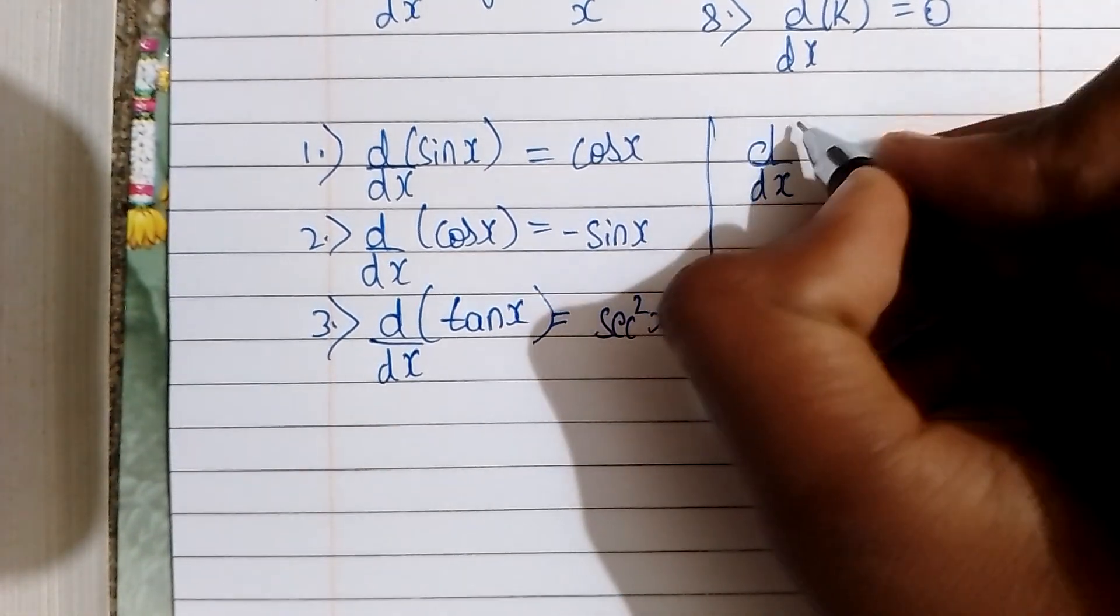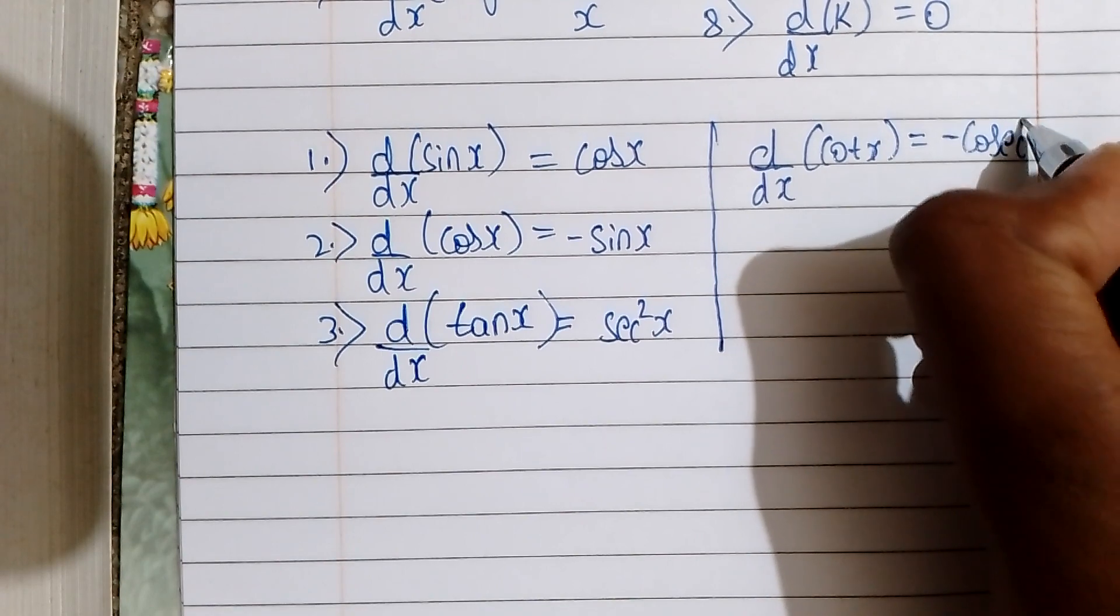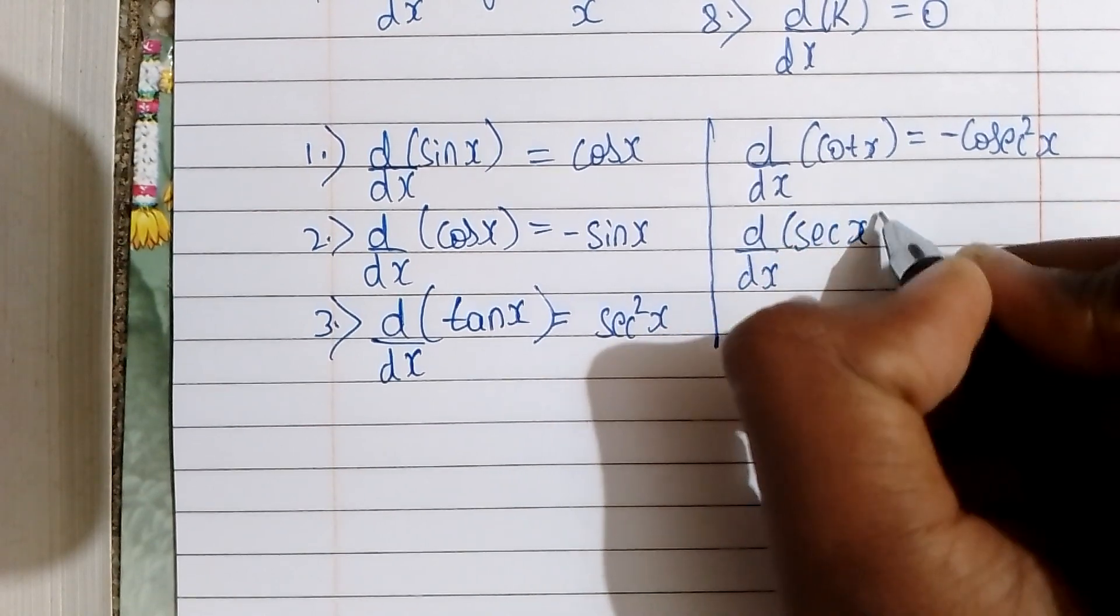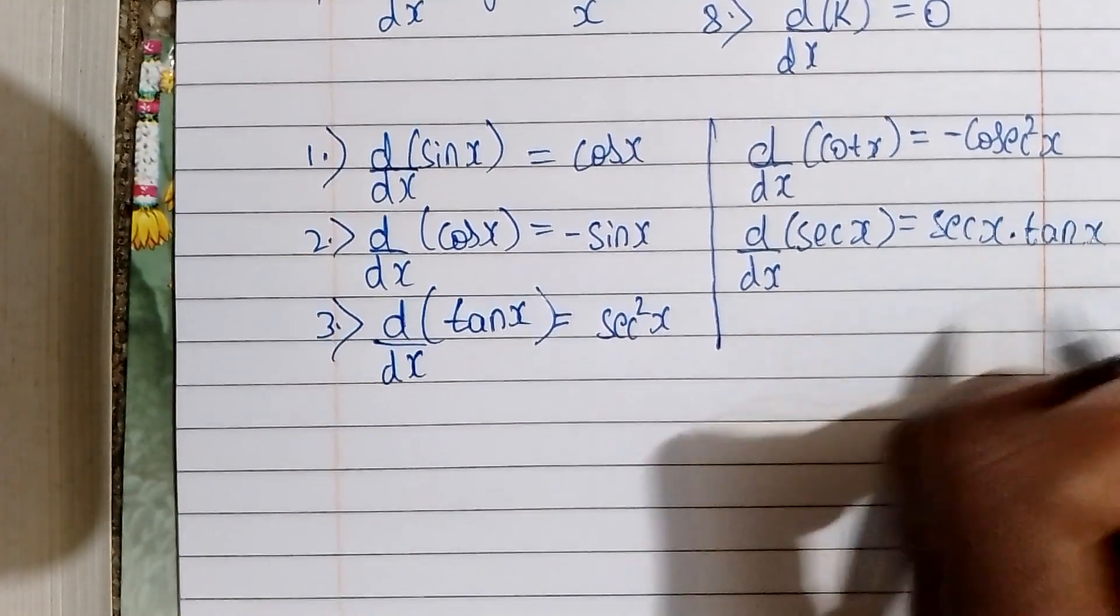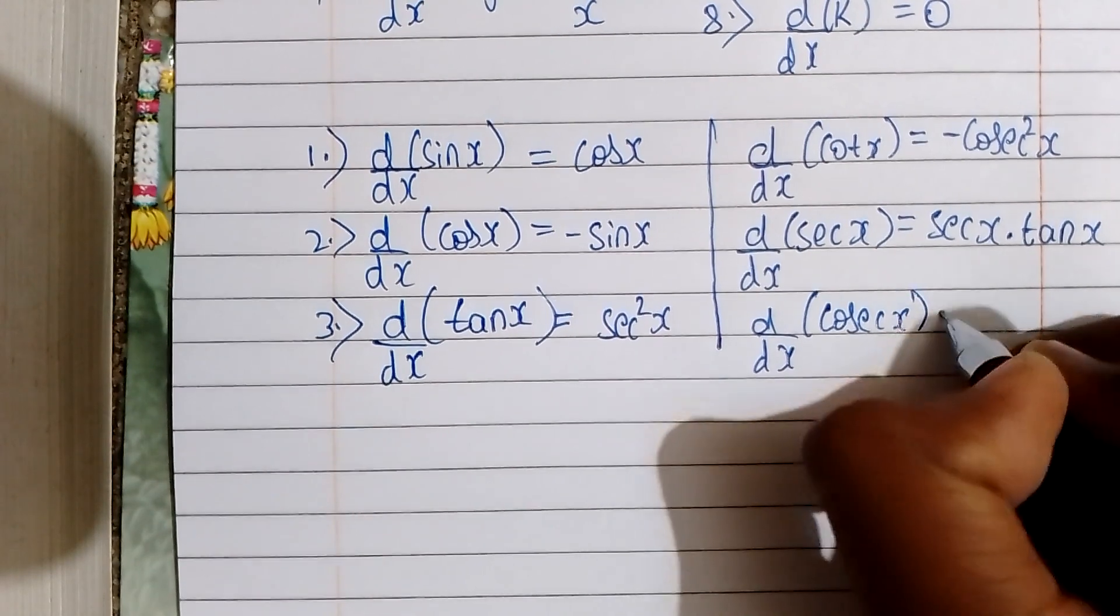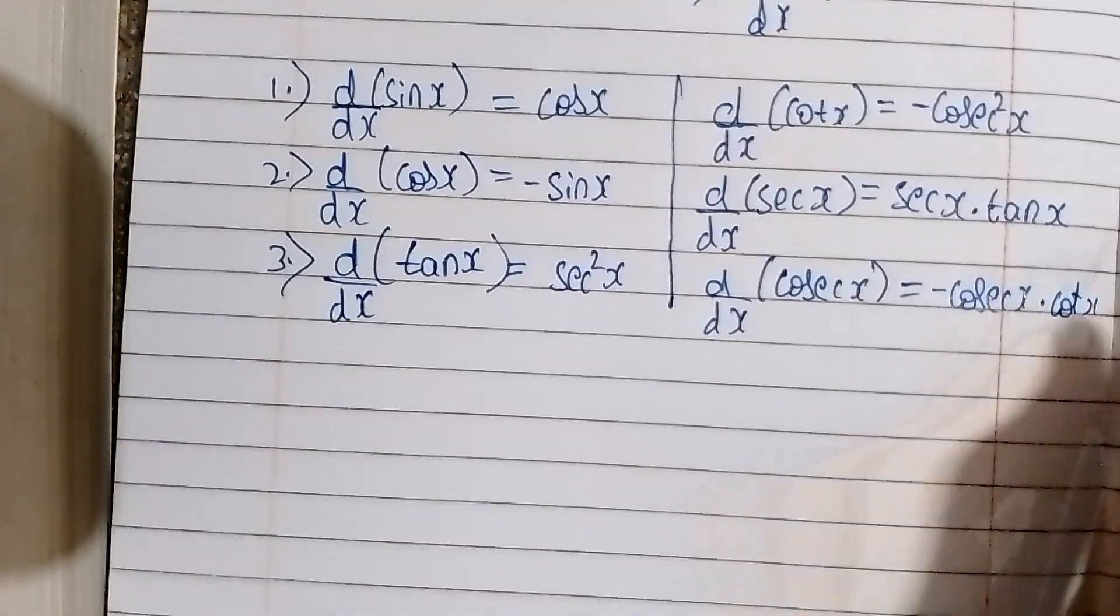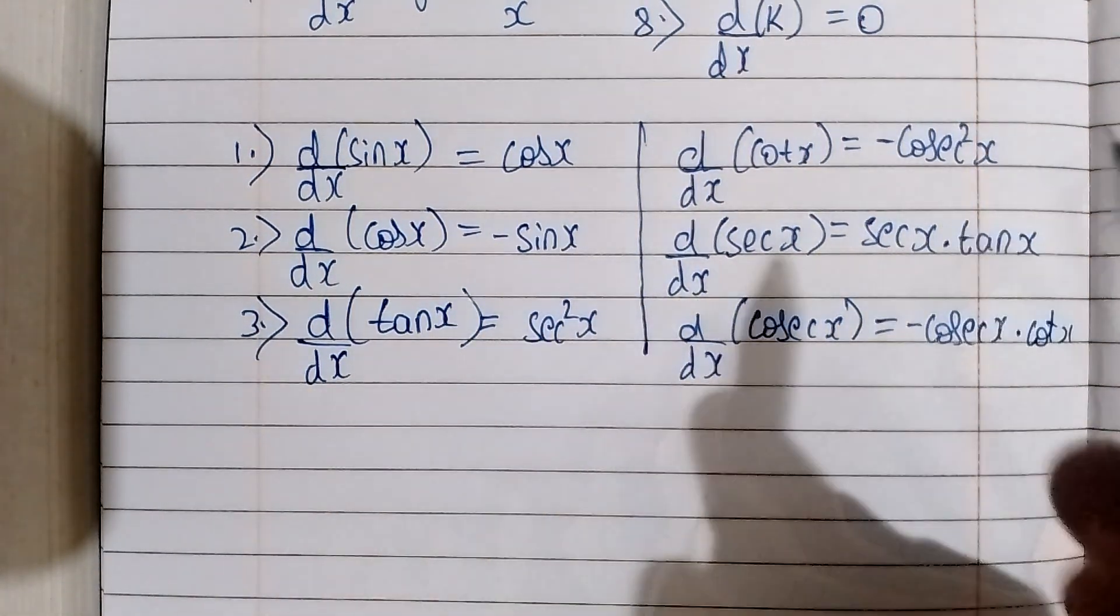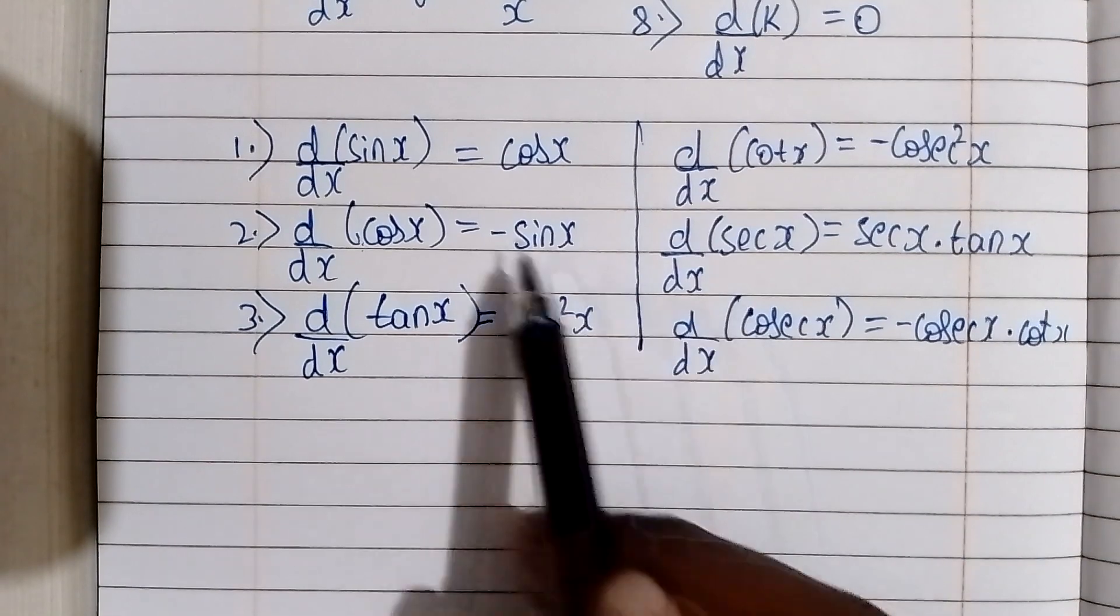d/dx of cot x is minus cosec² x. d/dx of sec x is sec x tan x. d/dx of cosec x is minus cosec x cot x. In trigonometry, if you want to add, the CO functions - cos, cot, cosec - all have the negative sign.